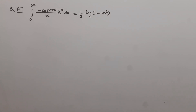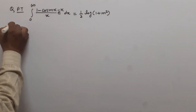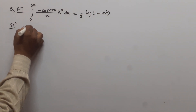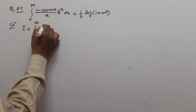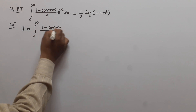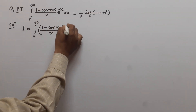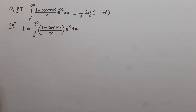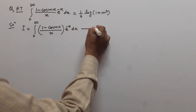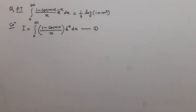In this integral, we have to integrate (1 - cos(mx)) / x multiplied by e to the power minus x between the limits 0 to infinity, and we have to prove that this equals (1/2) log(1 + m²). First, we suppose that the given integral is equal to I, and suppose this is equation 1.